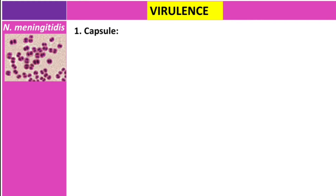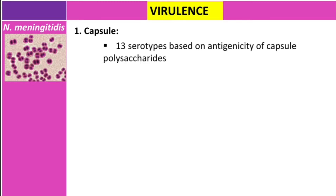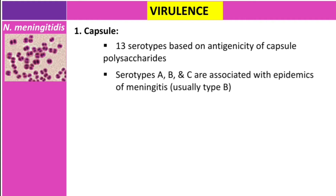The main virulence factor is the capsule, which helps evade phagocytosis. There are 13 serotypes based on the antigenicity of capsule polysaccharides. Serotypes A, B, and C are associated with epidemics of meningitis, but type B is the most common.